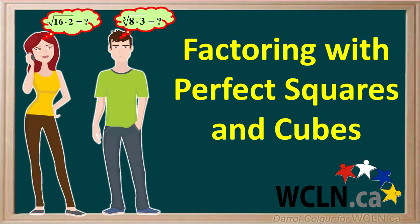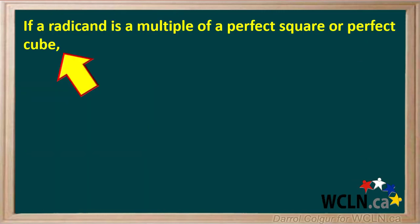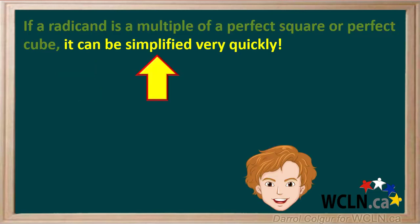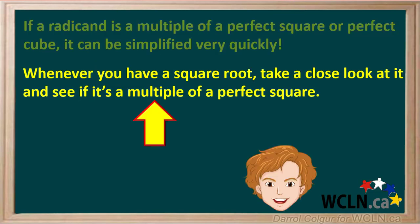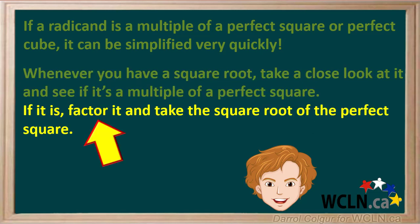A radical can be simplified if we can factor the radicand. If a radicand is a multiple of a perfect square or perfect cube, it can be simplified very quickly. Whenever you have a square root, take a close look at it and see if it's a multiple of a perfect square. If so, factor it and take the square root of the perfect square.